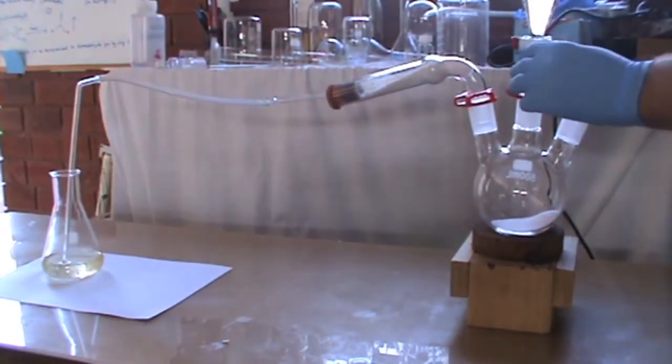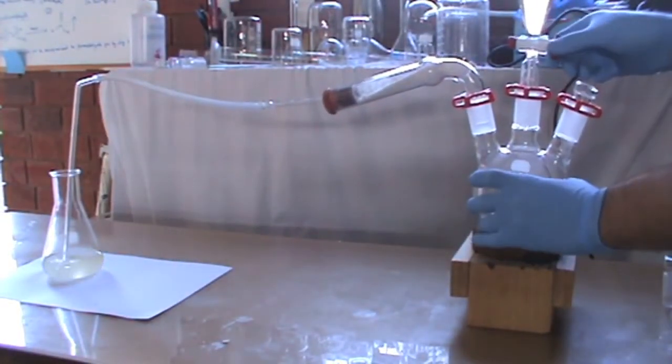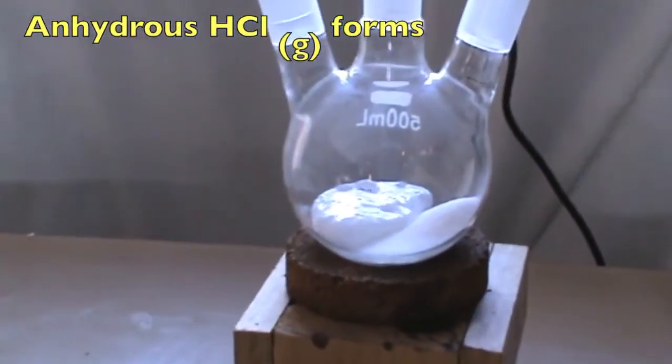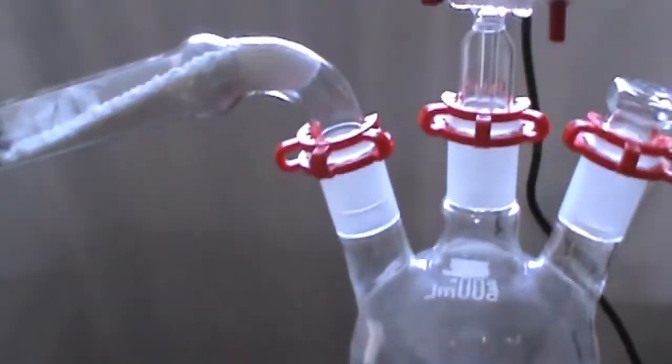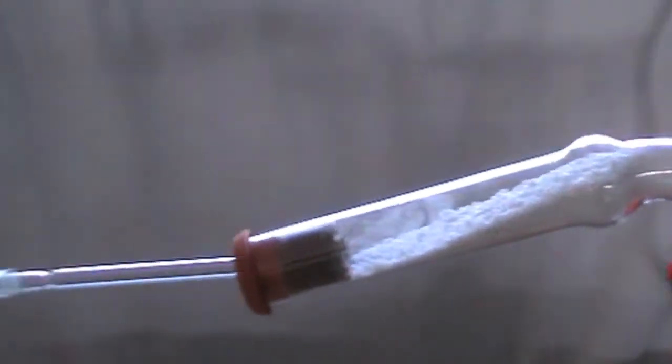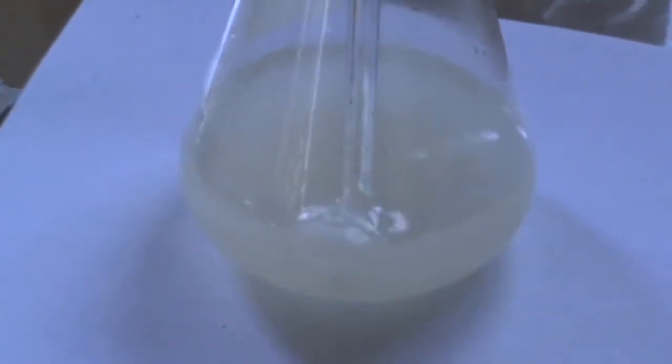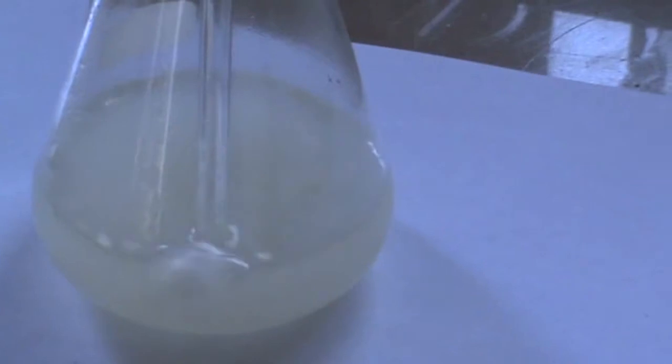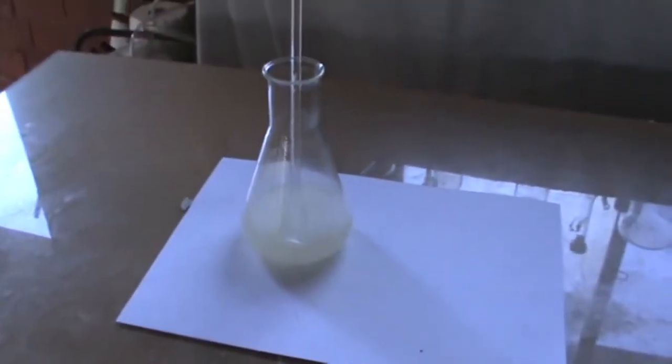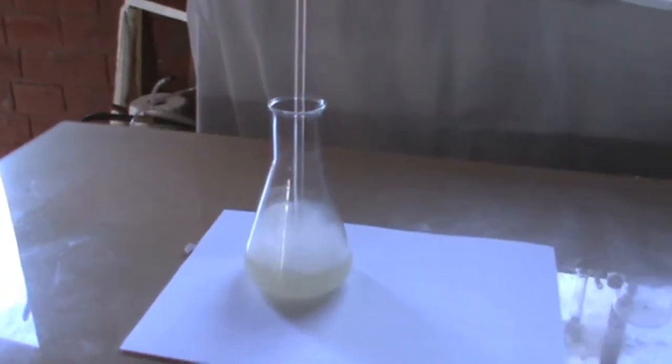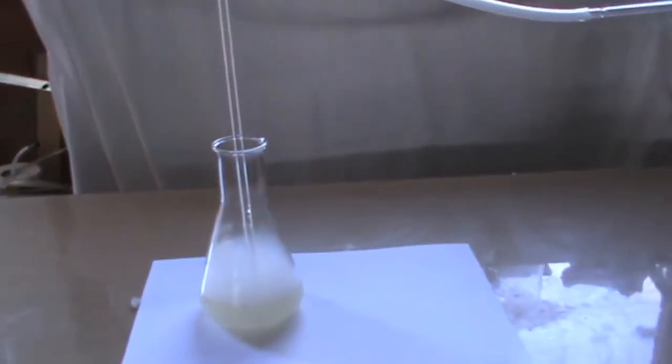Slowly drip the concentrated sulfuric acid into the sodium chloride crystals. Immediately, anhydrous hydrochloric acid gas forms and bubbles into the methamphetamine oil dissolved in toluene. As we can see, a dense white smoke forms over the mixture. Needless to say, perform this procedure outside or in a fume hood.